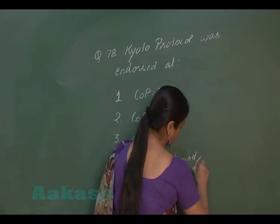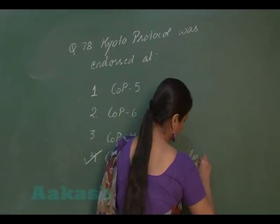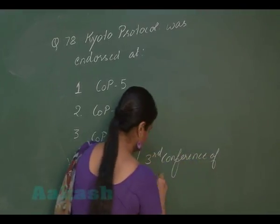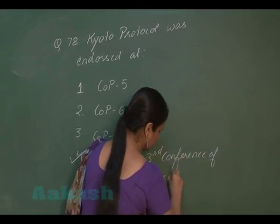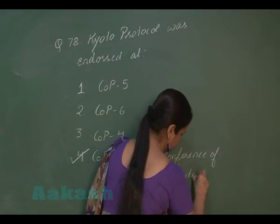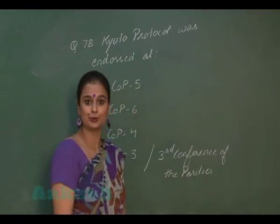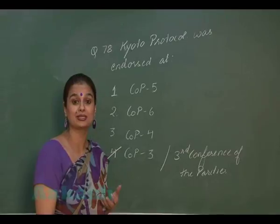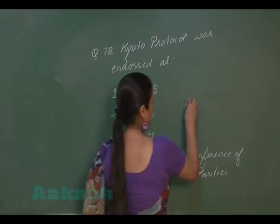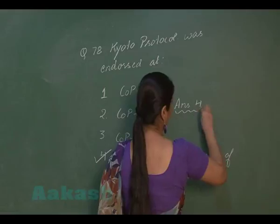It was the third Conference of the Parties held in Kyoto when this protocol was created, so for question number 78 the right option is 4.